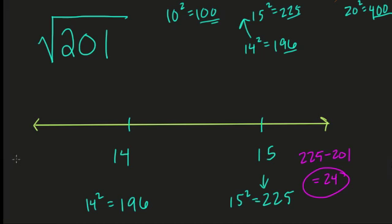But what about over here? Well, 201 minus 196 is just 5. So that means the square root of 201 is very close to 14. So I've plotted about here, let's say. There's the square root of 201.